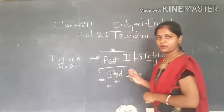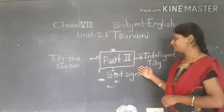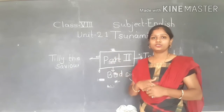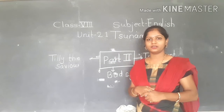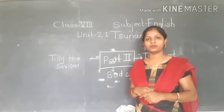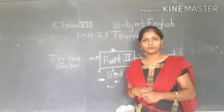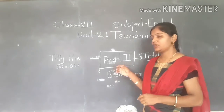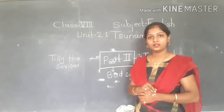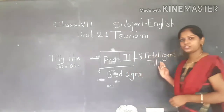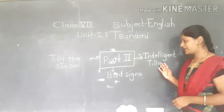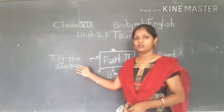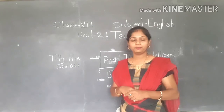In the second part of this lesson, we are going to learn a story from Thailand. This is because this tsunami affected 14 countries. The Indians were completely affected, and one of those countries was Thailand. In the second part, there is a story about one very intelligent girl who saw a bad sign and became a good savior of all the people.